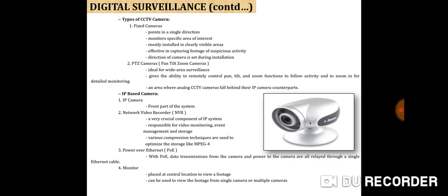Digital surveillance cameras come in two types: fixed camera and PTZ (pan, tilt, zoom). A fixed camera points in a single direction, monitors a specific area of interest, is mostly installed in clearly visible areas, is effective in capturing footage of suspicious activity, and its direction is set during installation. A PTZ camera is ideal for wide-area surveillance. It gives the ability to remotely control pan, tilt, and zoom functions to follow activity and zoom in for detailed monitoring. This is an area where analog cameras fall behind their IP camera counterparts.